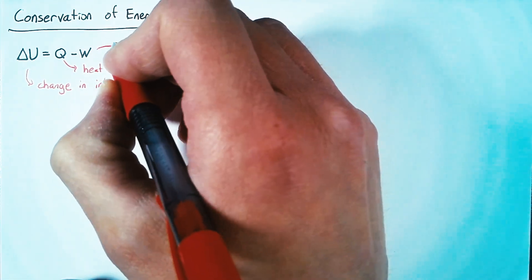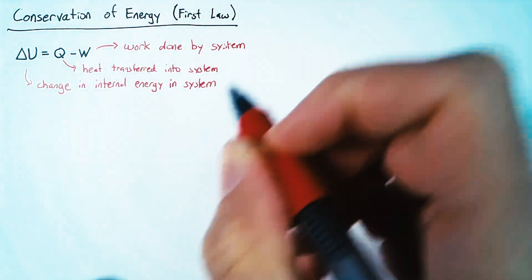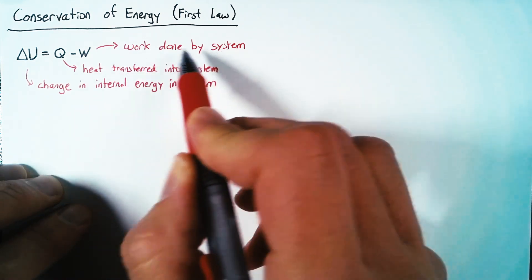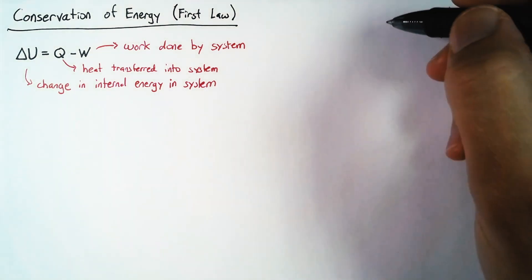And then finally, this W is the work done by the system. And it's negative here because if the system is doing work on something else, that means that it's giving its energy away.